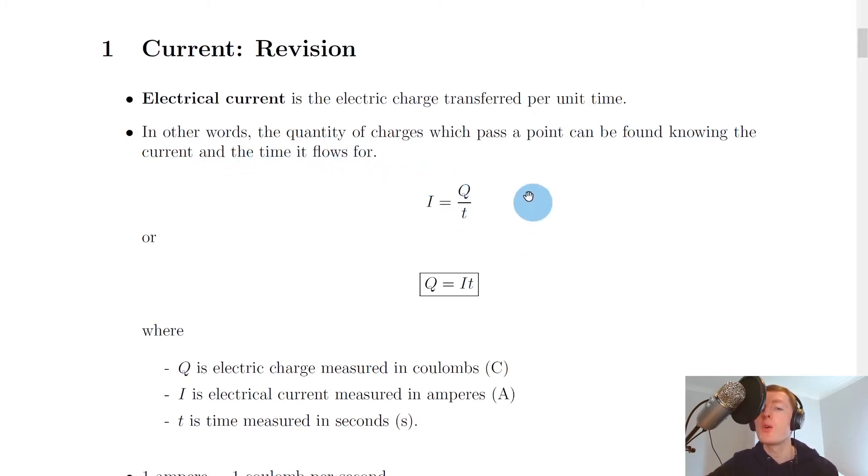So this gives us an equation here in terms of the symbols. So we have current I equals the charge Q divided by the time T. And that just comes from the definition up here, that electrical current I is the electric charge Q transferred per unit time T.